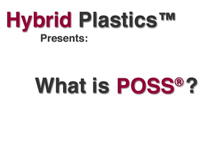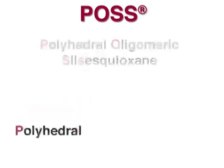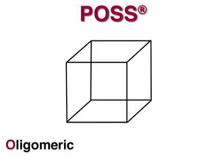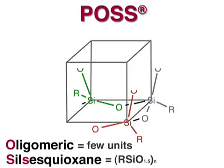If you're new to hybrid plastics, you may find yourself asking, what is POSS? POSS is an acronym for polyhedral oligomeric silsesquioxane. While that is quite a mouthful, the name says it all. This means that a regular, three-dimensional shape is formed by a few units, each containing a silicon atom, one and a half oxygen atoms, and an organic group, which come together to form a molecule.